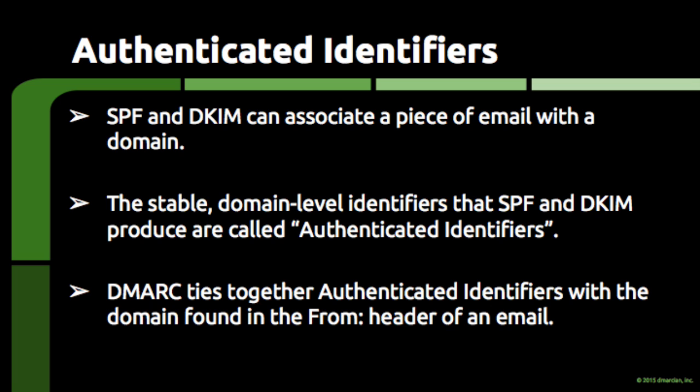By themselves, SPF and DKIM can associate a piece of email with a domain. In the language of DMARC, SPF and DKIM generate authenticated identifiers. DMARC attempts to tie the results of SPF and DKIM — the authenticated identifiers — to the content of email, specifically to the domain found in the FROM header of an email.